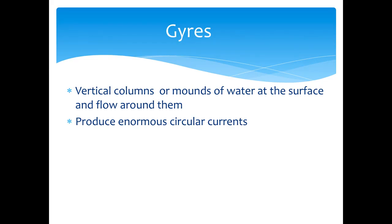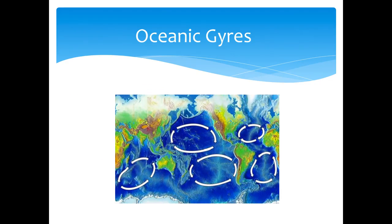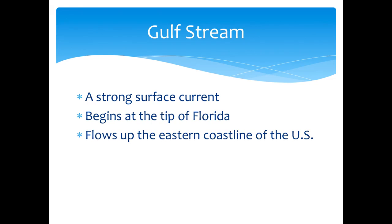Gyres — we know there's a lot of trash in the gyres because of how the currents are moving in our oceans. A gyre is a vertical column or mound of water at the surface that flows around, producing enormous circular currents. There are five major gyres. The Gulf Stream warm water current — definitely know this, this slide is important.